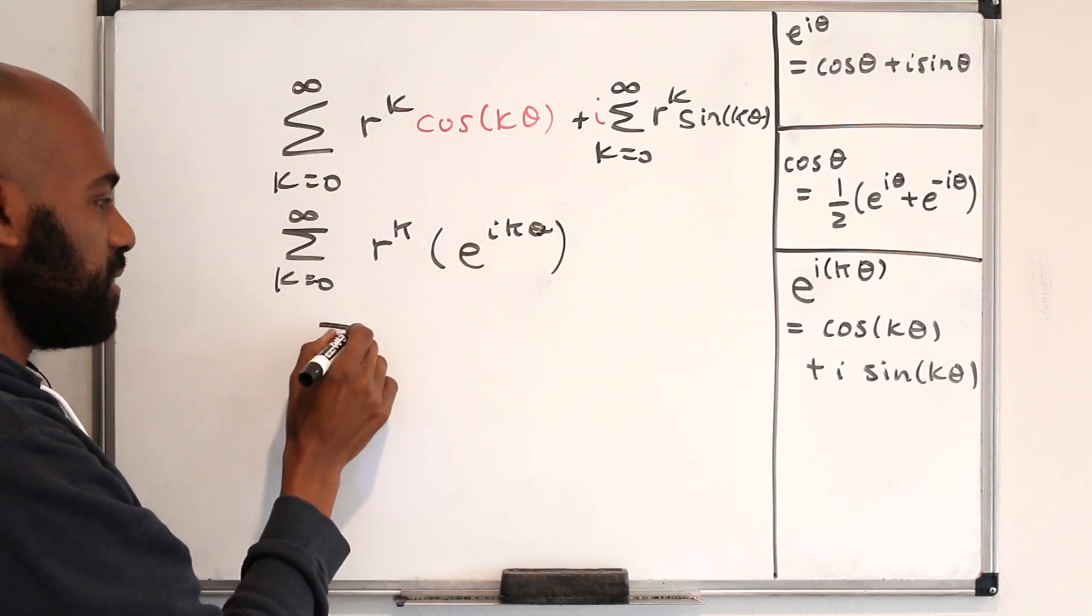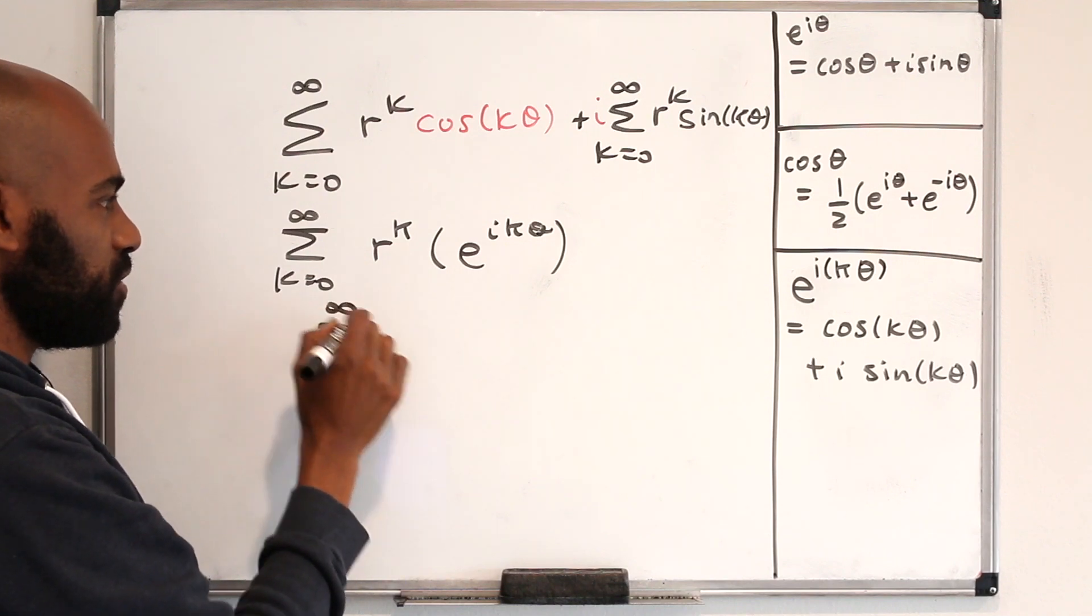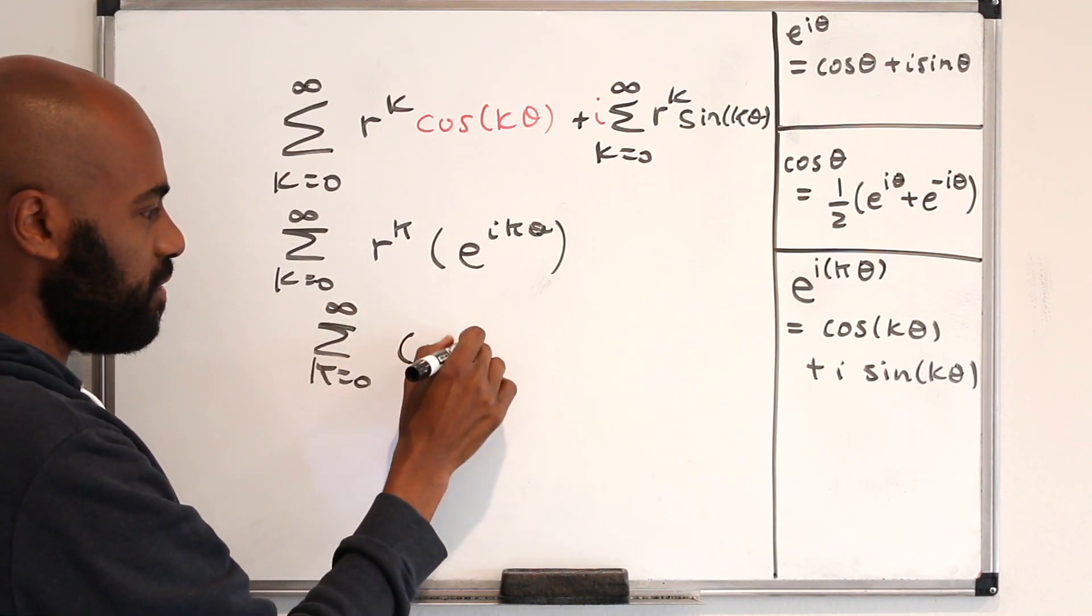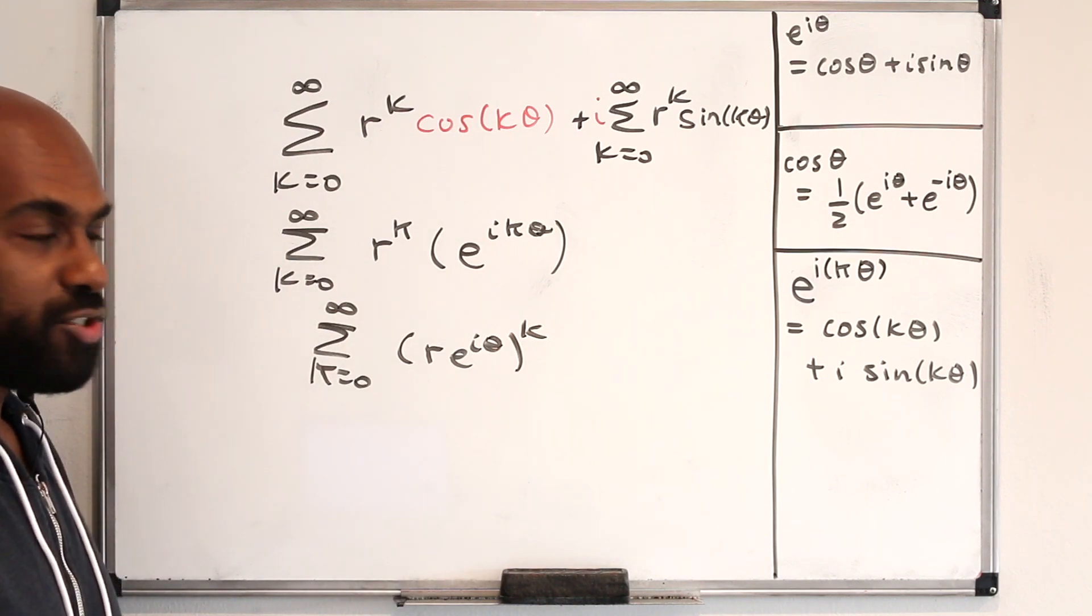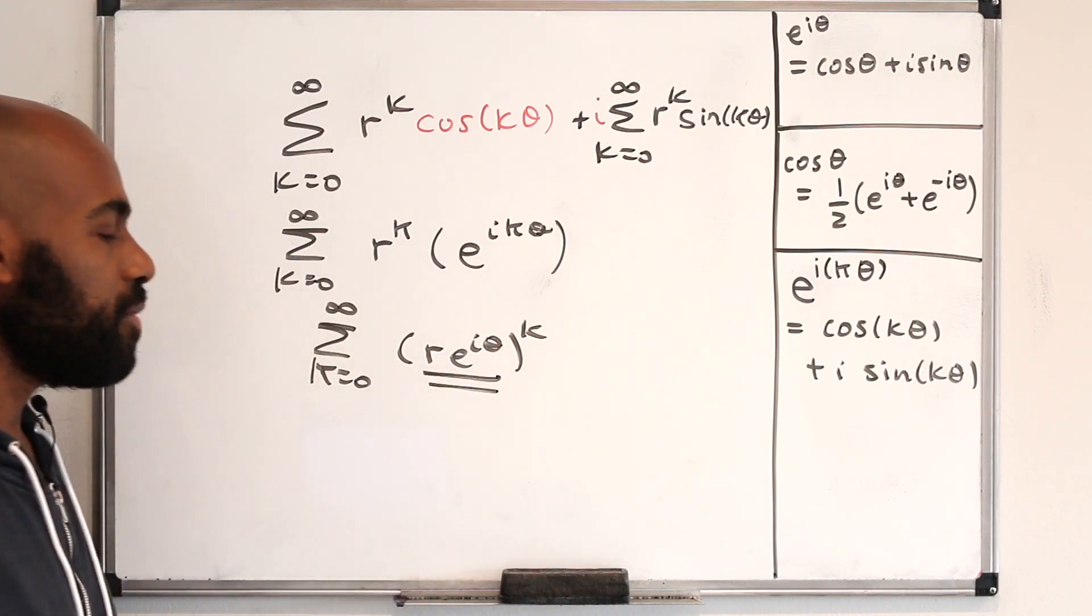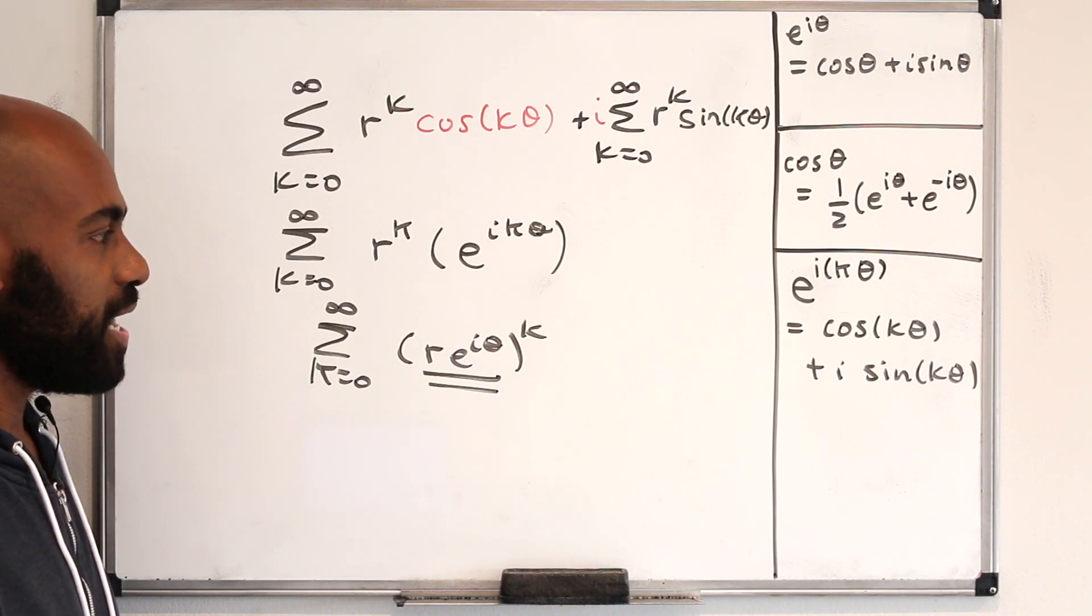And we can represent this in a simpler form as a sum k equals 0 to infinity of r e to the i theta to the k. And now we have a geometric series whose common ratio is r e to the i theta, so it's a complex thing.